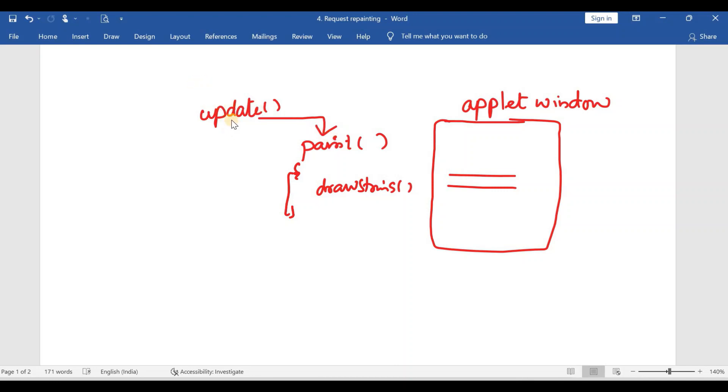So this update method will call the paint method. And again, same question: who is going to call the update method? Repaint. So when you call the repaint method, it will call the update and update will call the paint method. And finally, the string will be displayed in the output window. This is the procedure.